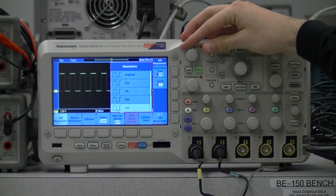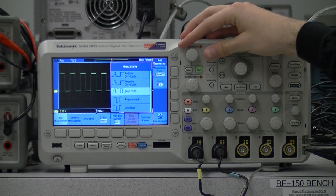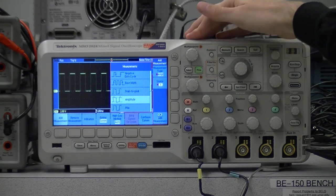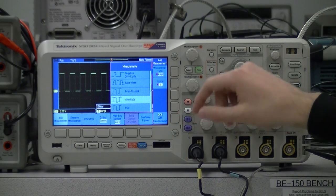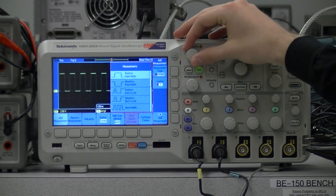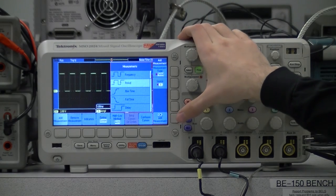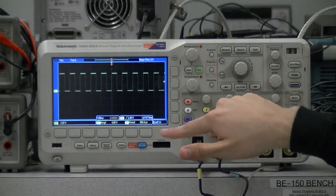We then can scroll between the options for different types of measurements using this knob, which can be very touchy. Let's scroll down to find, for example, amplitude, which is the voltage of the signal. We then press add measurement here to add it. Other things of interest include period, which is the inverse of frequency. We can now close these menus again with the menu off button.